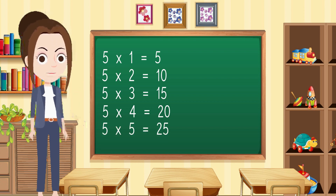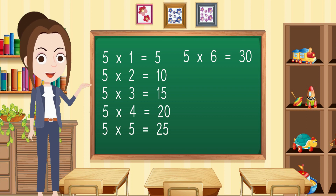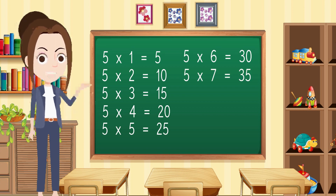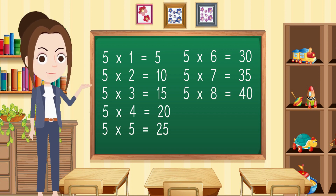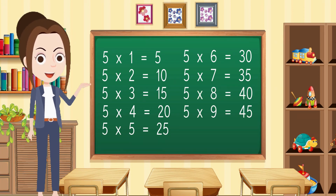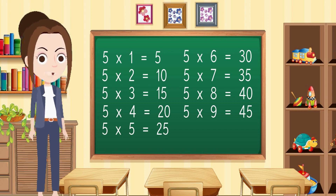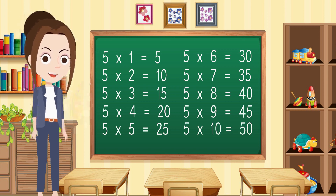5 6s are 30, 5 7s are 35, 5 8s are 40, 5 9s are 45, 5 10s are 50.